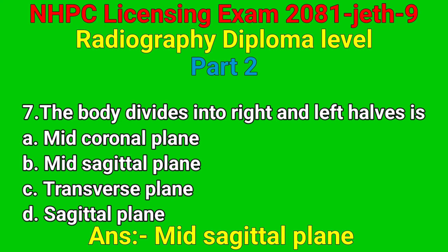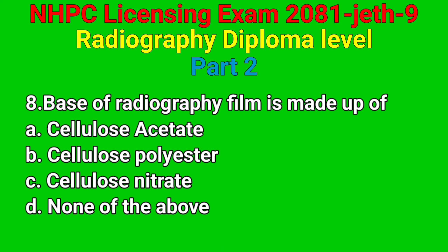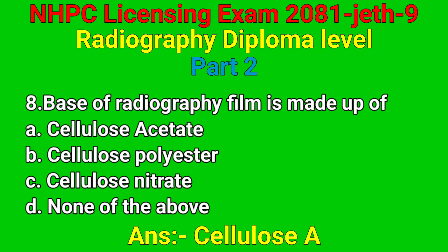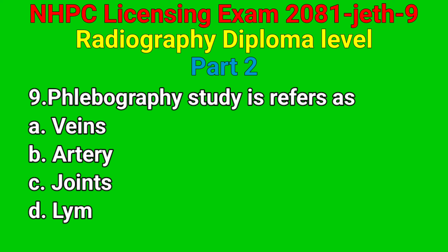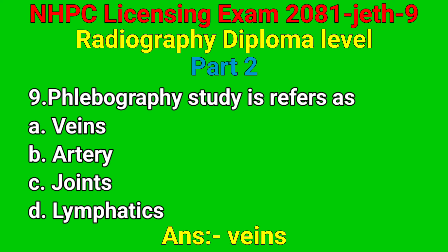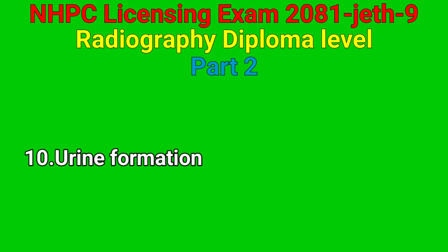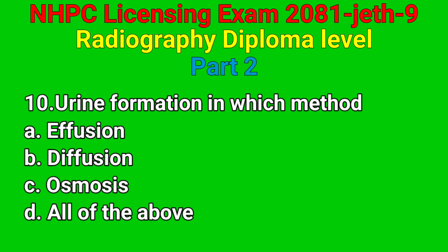Question number seven: the body divided into right and left halves — option A, B, C, D. Correct answer: option B — mid sagittal plane. Question number eight: base of radiography film is made of — option A, B, C, D. Correct answer: option A — cellulose acetate. Question number nine: phlebography study is referred to as — option A, B, C, D.